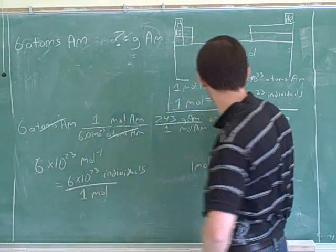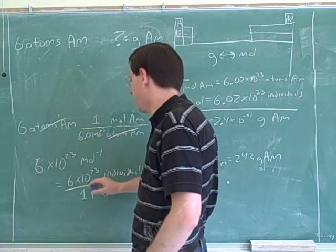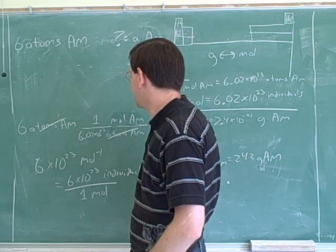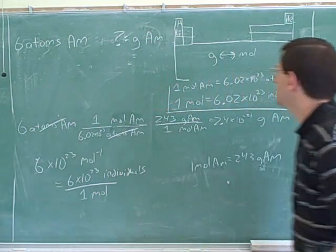Per one mole. So this really does have the same information that we put over here. So any textbook would have Avogadro's number. But we need to know that Avogadro's number really tells you the number of individuals in a mole. Okay.